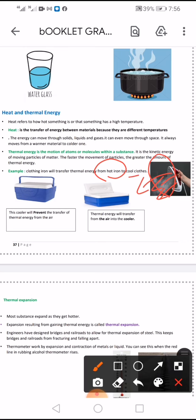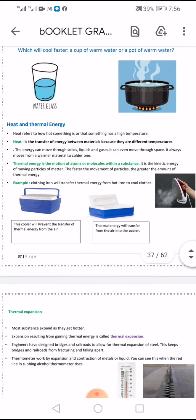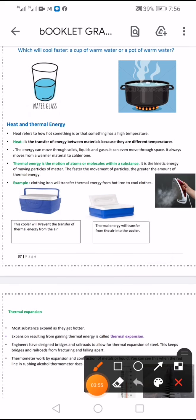Look at this cooler. First one and second one. Which one, first or second, will prevent the transfer of thermal energy? Exactly. First one. Why? As this cooler is closed, while the second one is open. So this cooler will prevent the transfer of thermal energy from the air. So first one, this one, will prevent transfer as it's closed.